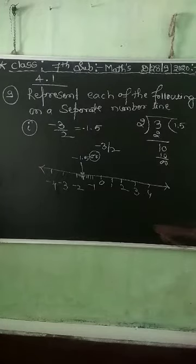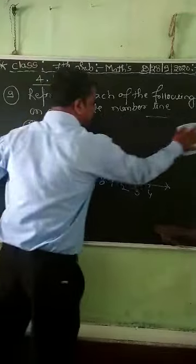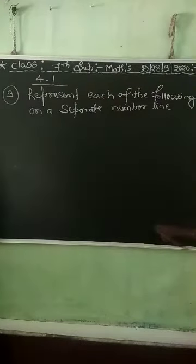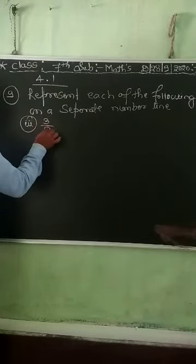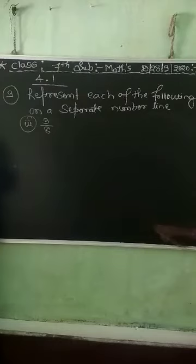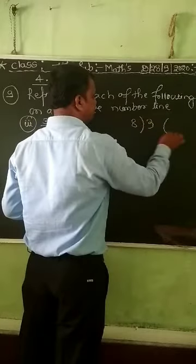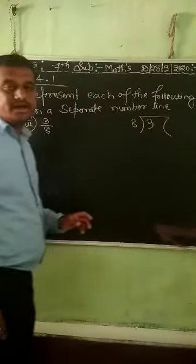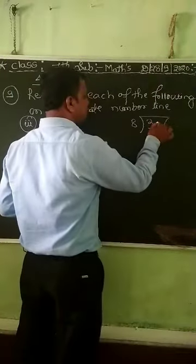Next number is 3 by 8. To convert to decimal: here 3 is the dividend and 8 is the divisor. Since the dividend is smaller than the divisor, we place a decimal point and write 0.